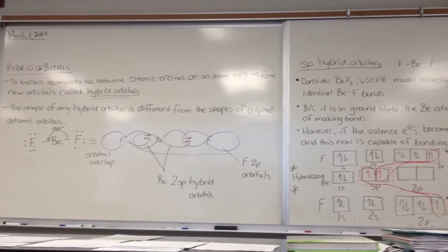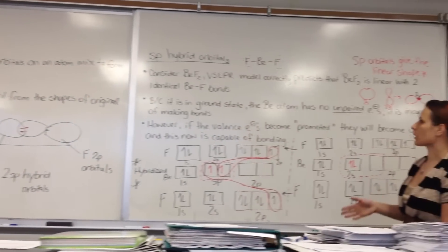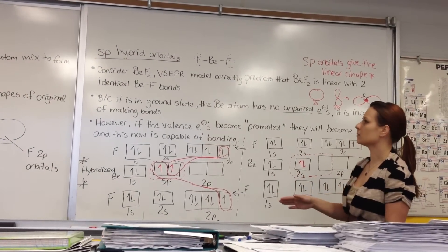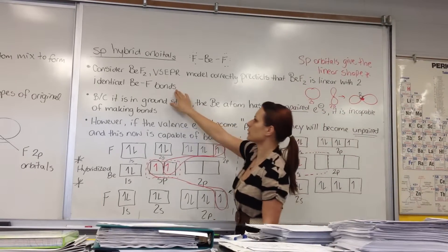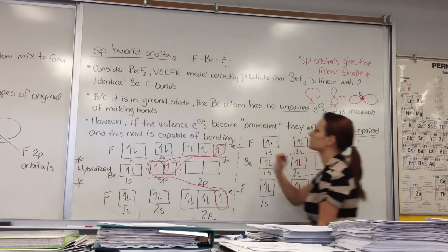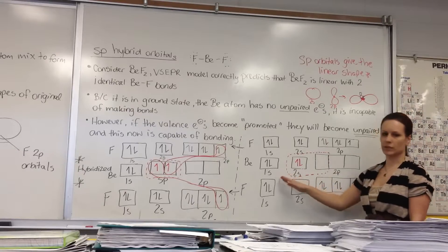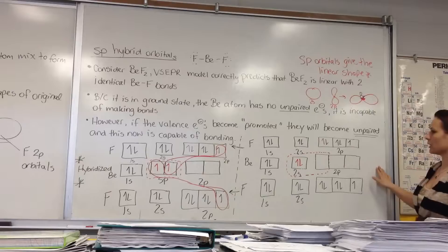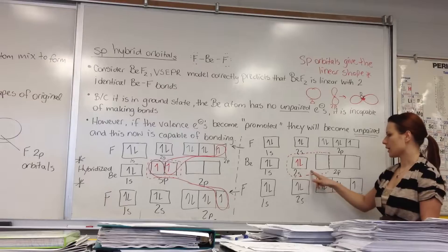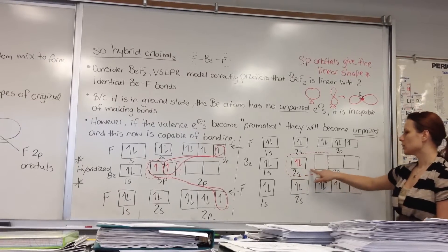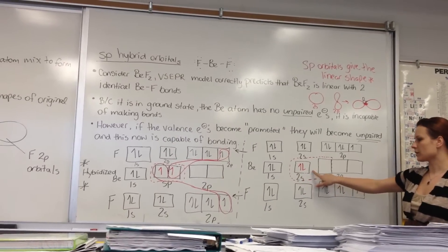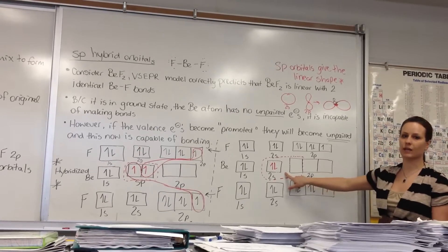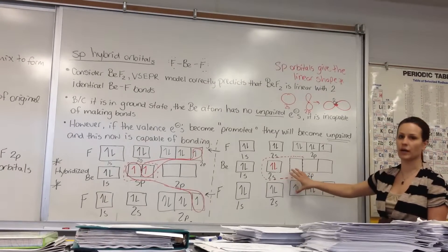For SP hybrid orbitals, considering beryllium difluoride, VSEPR tells us that it is linear with two identical beryllium-fluorine bonds. However, if you look at beryllium in its ground state — drawn here in electron box diagrams — beryllium is 1S², 2S², which shows that all four of these electrons are paired. Because they're paired, bonds cannot occur if we leave them in the ground state.